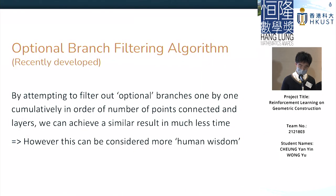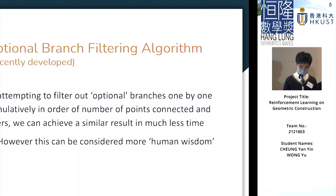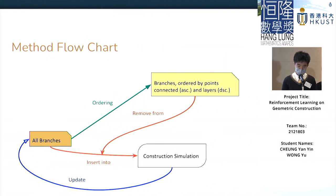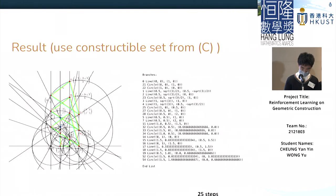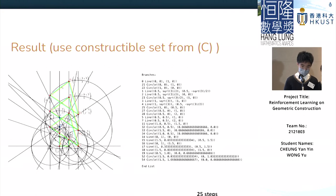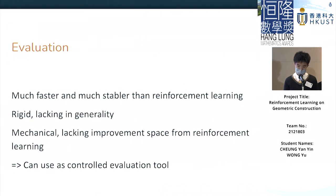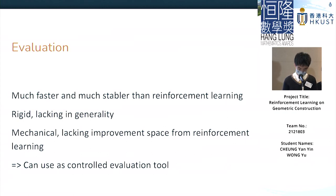Besides that, we recently developed a new algorithm that is more mechanical — it iterates through each branch and checks if the branch is actually necessary by removing it and testing. By this, we achieved pretty good results across the different sets. However, we think this approach is more mechanical and lacks improvement space. While it is efficient, it is fairly determined by the given branches, so it is best used as a construction-checking tool against future reinforcement models.